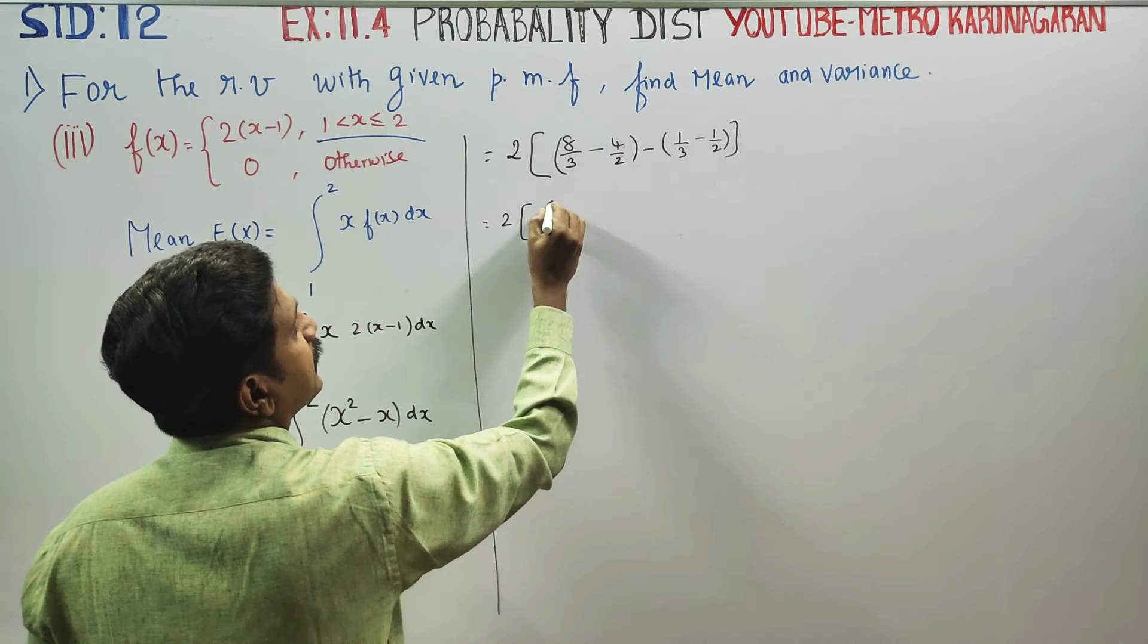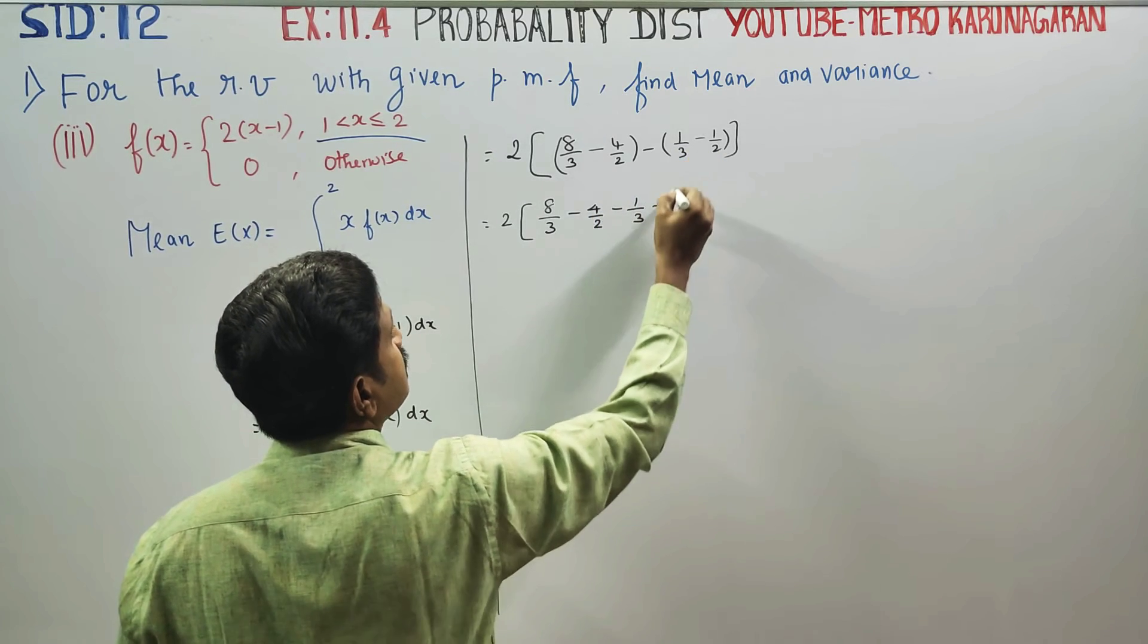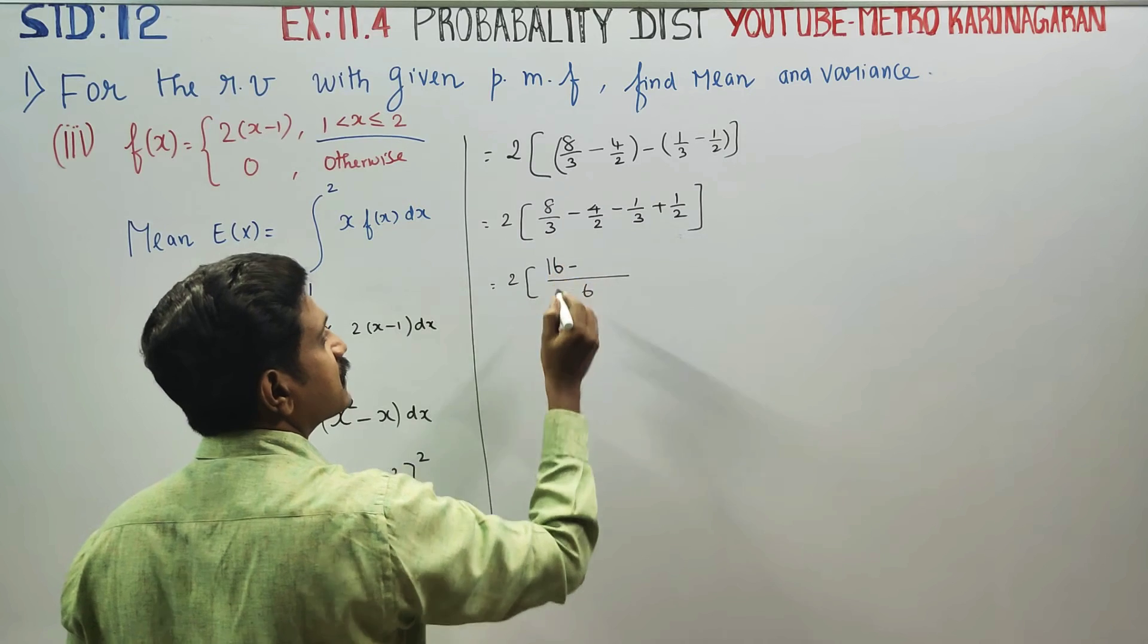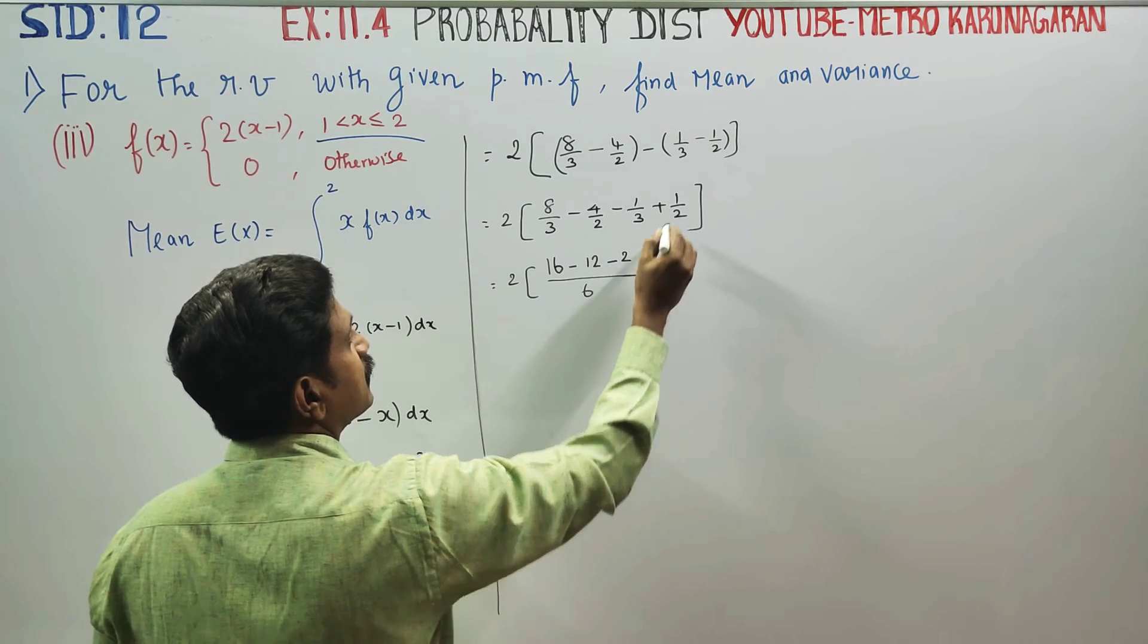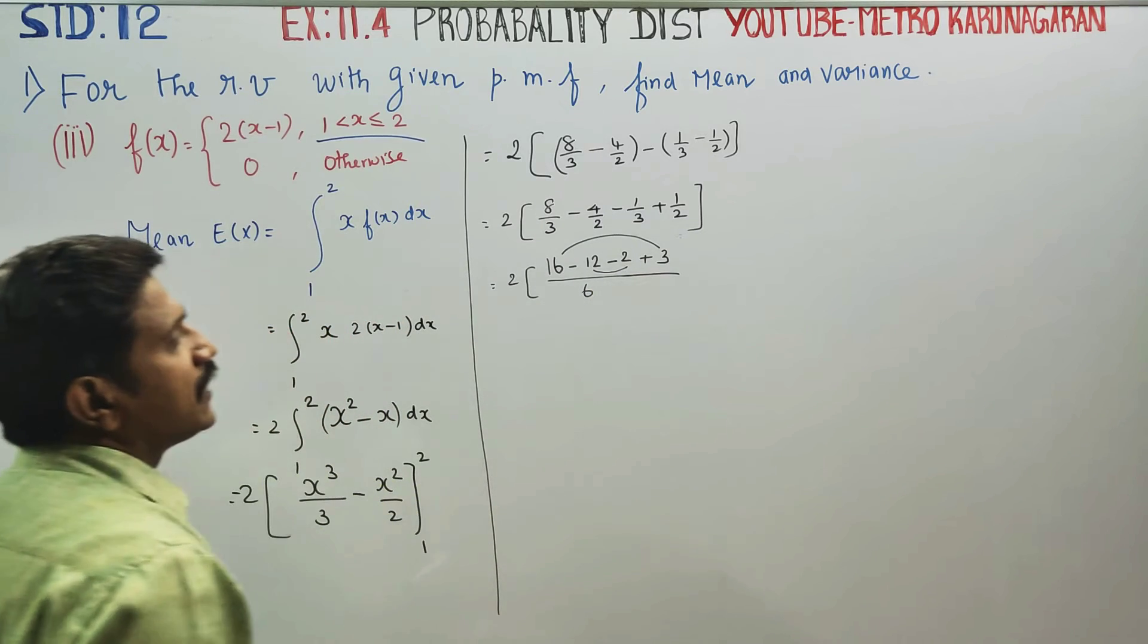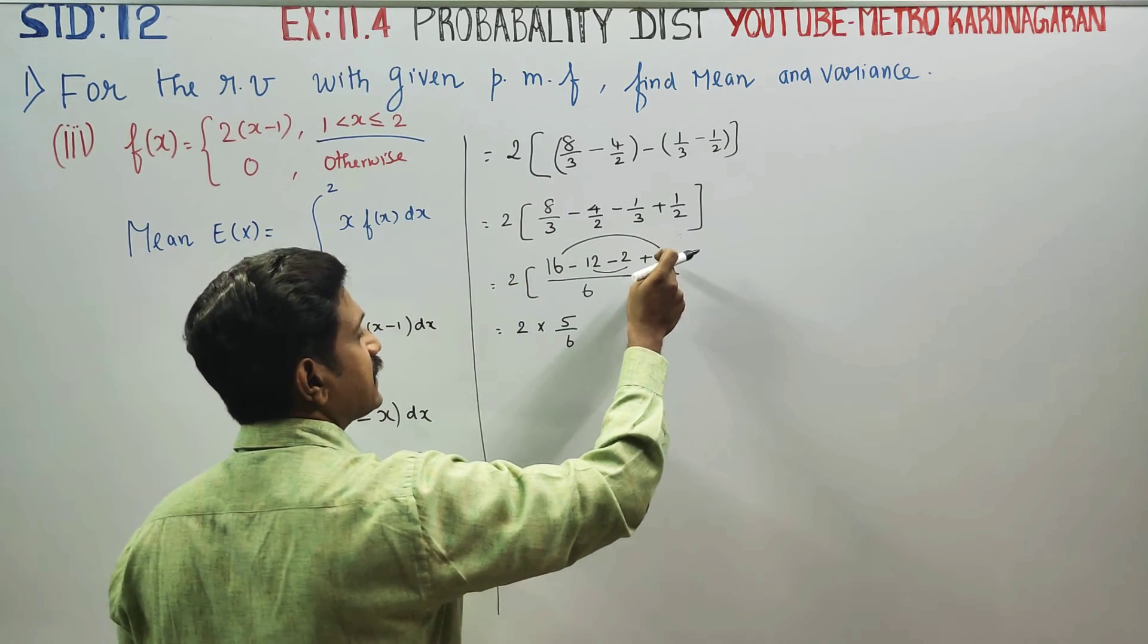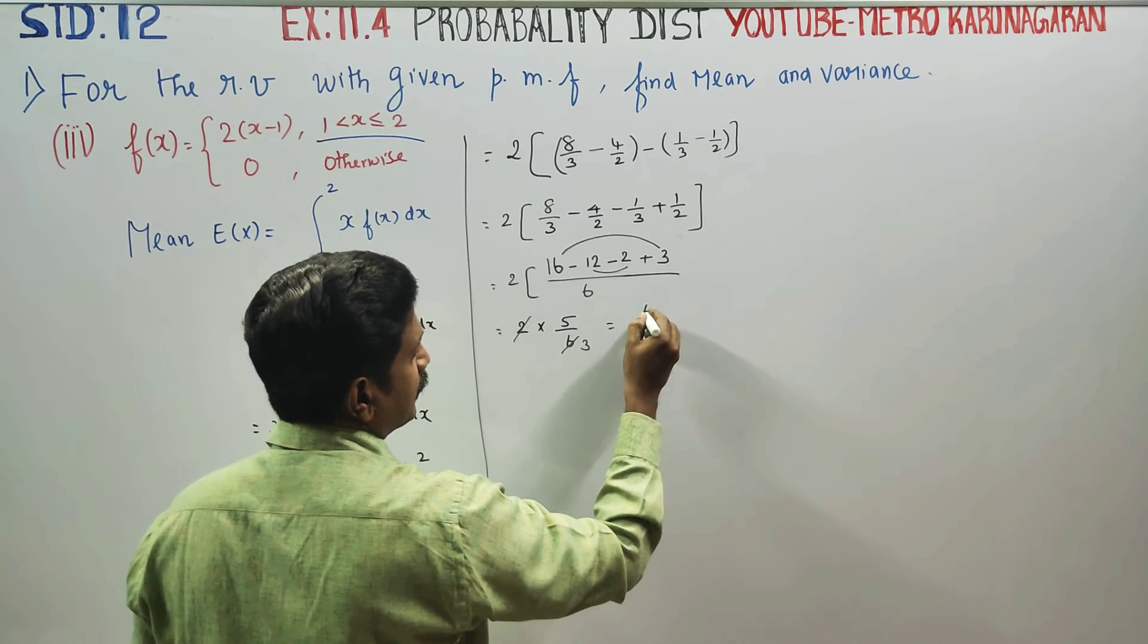This equals 2 into, upper limit: 8 by 3 minus 4 by 2, minus lower limit: 1 by 3 minus 1 by 2. Equal to 2 times 8 by 3 minus 4 by 2 minus 1 by 3 plus 1 by 2. Taking LCM as 6: 2 times 8 is 16, 3 times 4 is 12. This gives us 19 minus 14 which is 5 by 6. So 2 into 5 by 6 gives 5 by 3. Therefore this is your expectation of x.